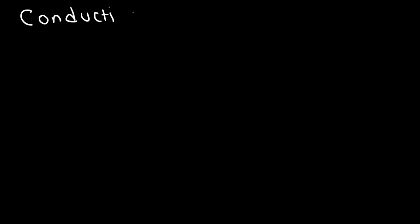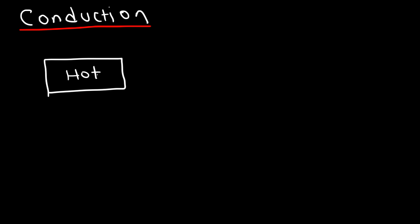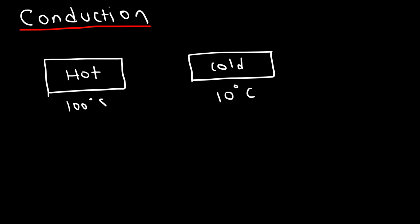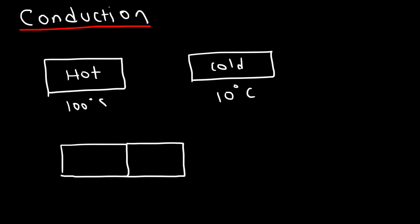In this lesson we're going to talk about three methods of heat transfer: conduction, convection, and radiation. Let's start with conduction. Heat conduction occurs through contact. So if I have a very hot metal bar at 100 degrees Celsius and a cold metal bar at 10 degrees Celsius, once they're in contact heat is going to flow from the hot region to the cold region.